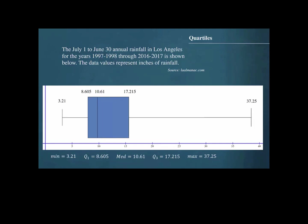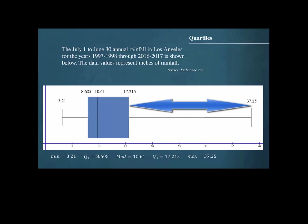The box plot shows us the distribution of the data values with regard to the quartiles. For instance, we can see that 50% of the data values appear to be clustered in a short span from the minimum value of 3.21 to the median of 10.61. We can likewise see that the upper 25% of the data set appears to have a wider spread, as shown by the length of the horizontal line connecting the third quartile and the maximum data value.